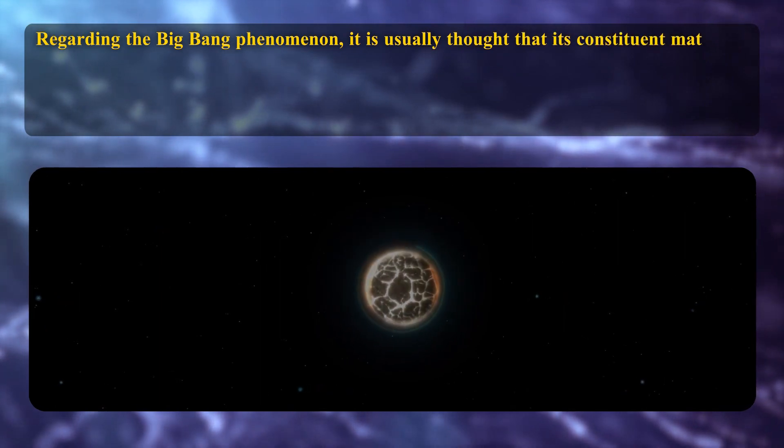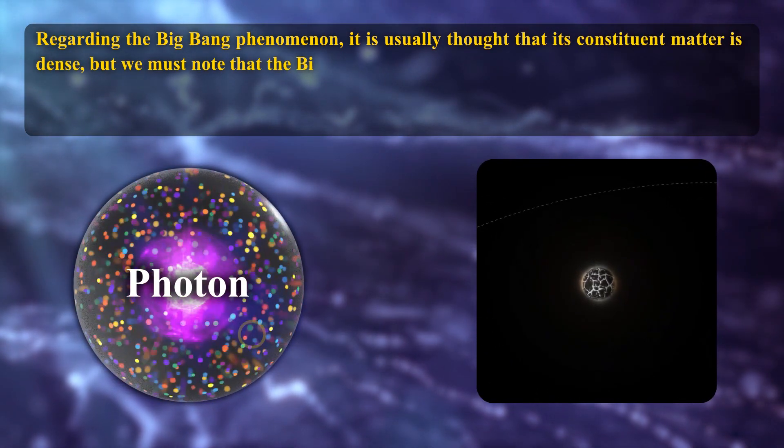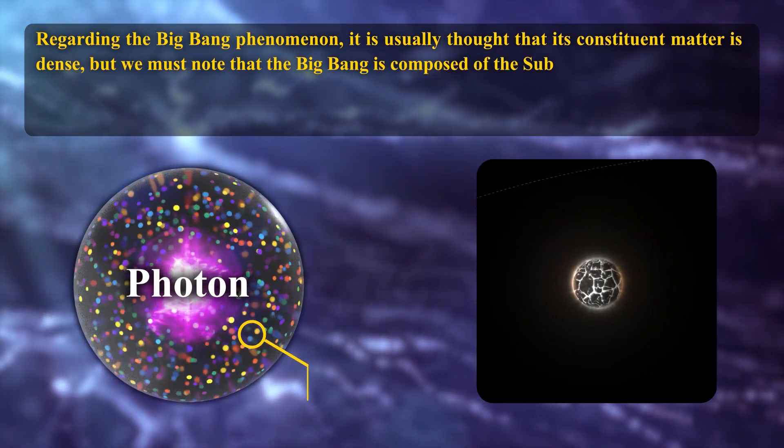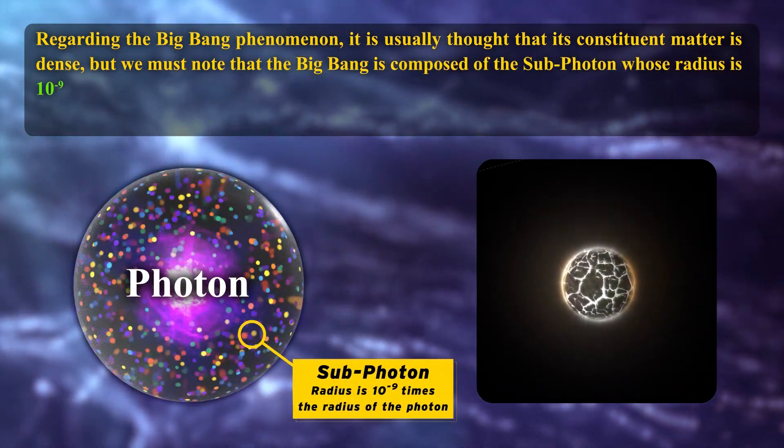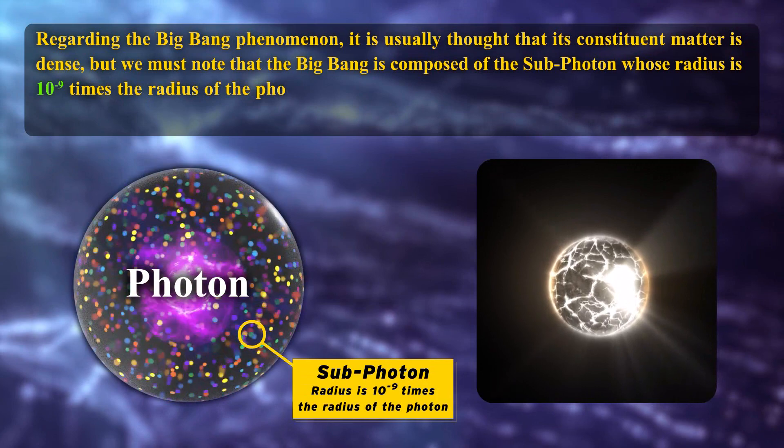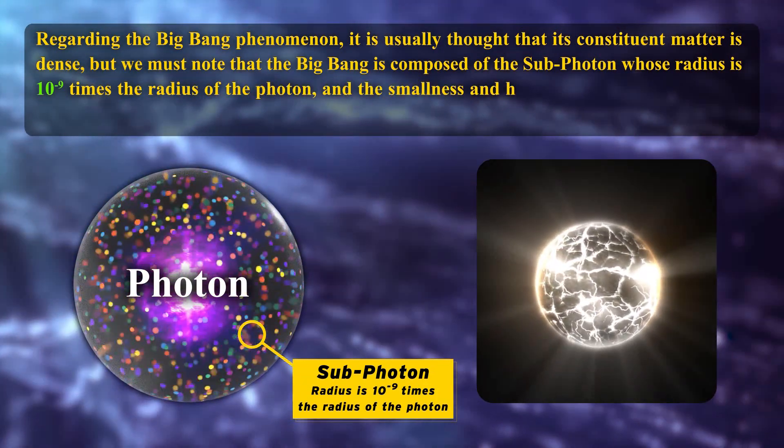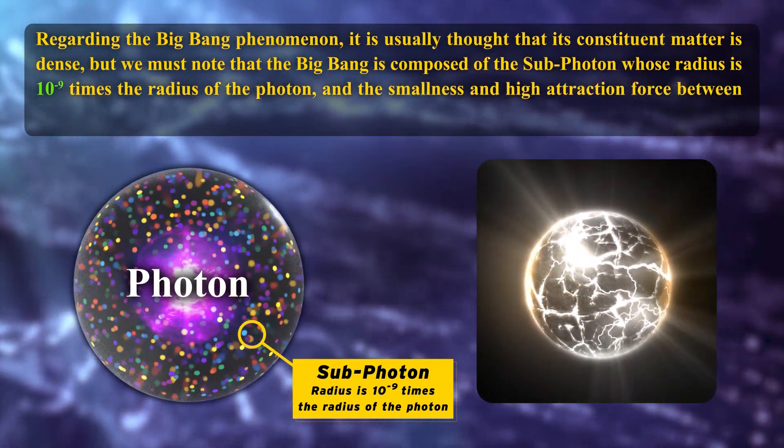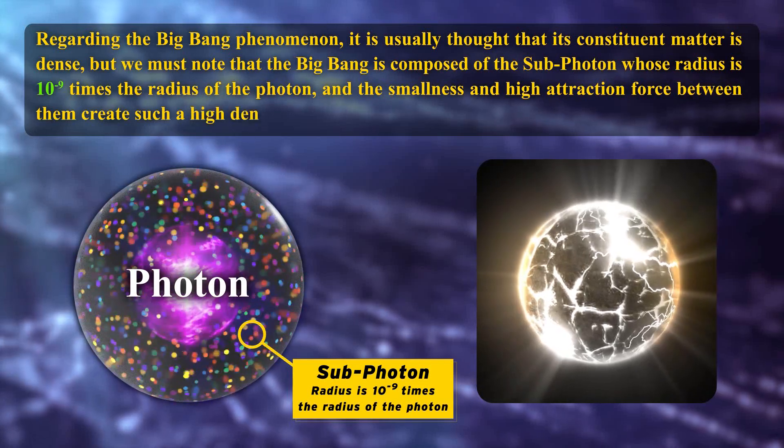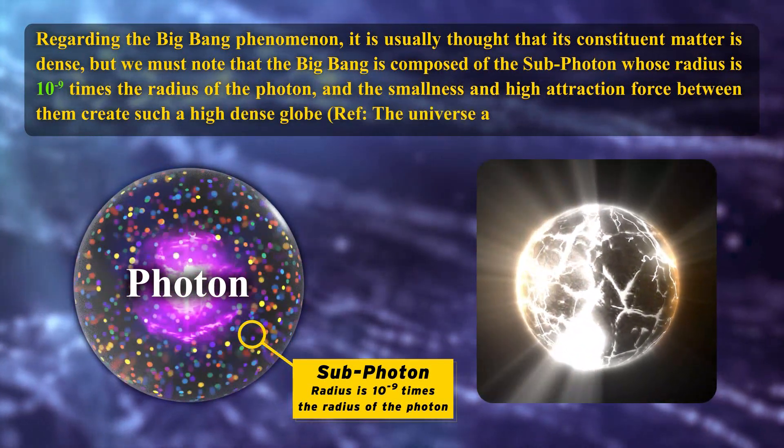Regarding the Big Bang phenomenon, it is usually told that its constituent matter is dense, but we must note that the Big Bang is composed of the sub-photon whose radius is 10 to the power of minus 9 times the radius of the photon, and the smallest and high attraction force between them creates such a high dense globe.